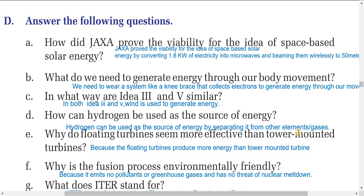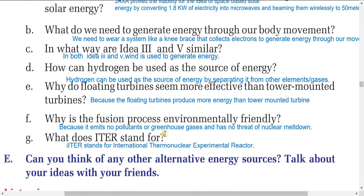Question E: Why do floating turbines seem more effective than tower-mounted turbines? Floating turbines seem more effective because they produce more energy than tower-mounted turbines. Question F: Why is the fusion process environmentally friendly? The fusion process is environmentally friendly because it emits no pollutants or greenhouse gases and has no threat of nuclear meltdown.